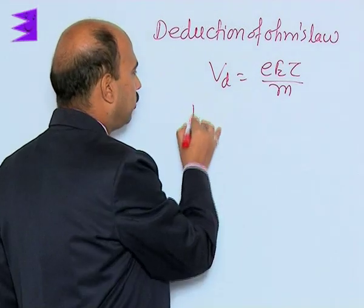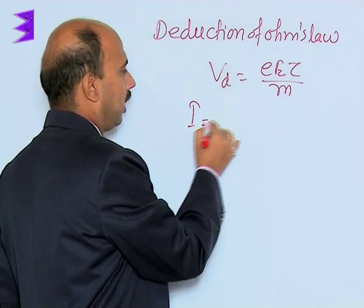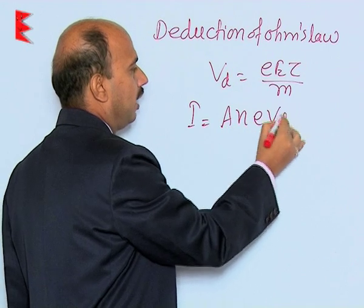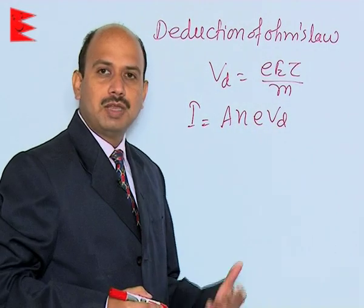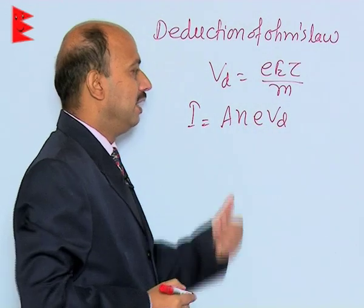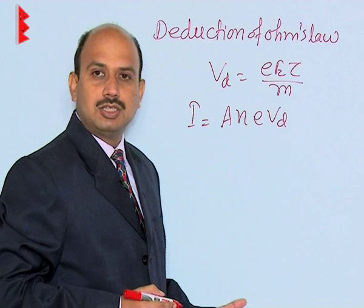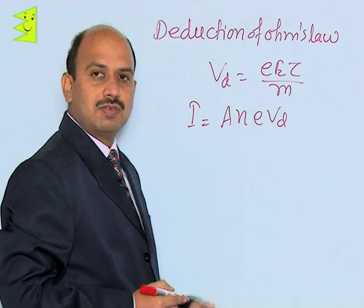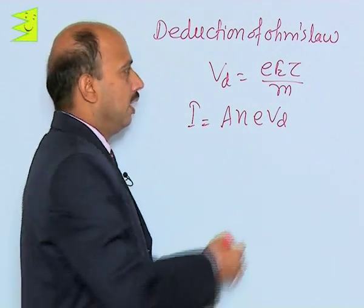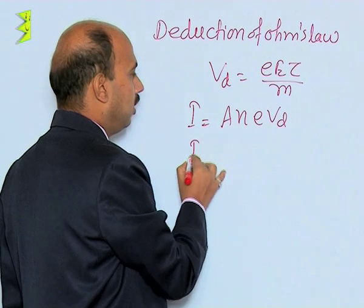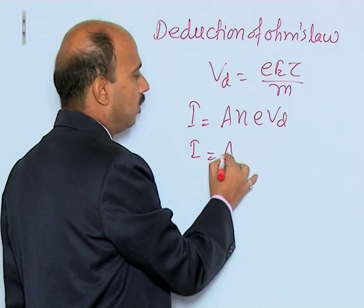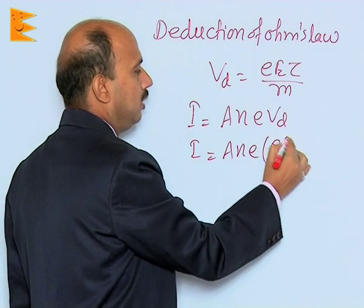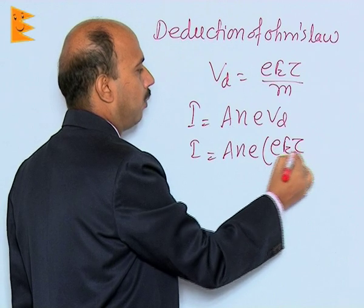We also know this relation: I is equal to A n e V_d, where n is the number of electrons per unit volume, e is the charge, A is area of cross section, and V_d is drift velocity. Replacing the value of V_d, we get I is equal to A n e into eEτ upon m.